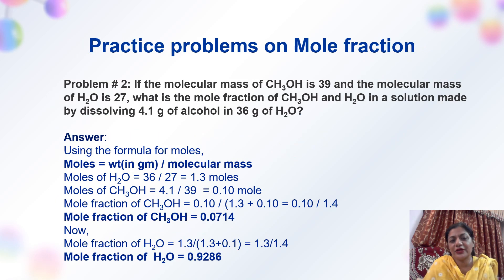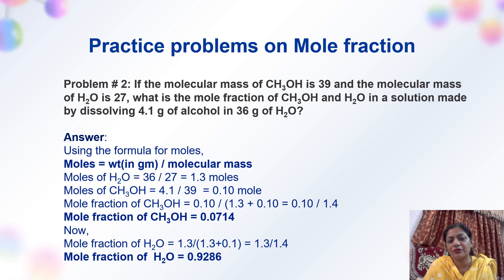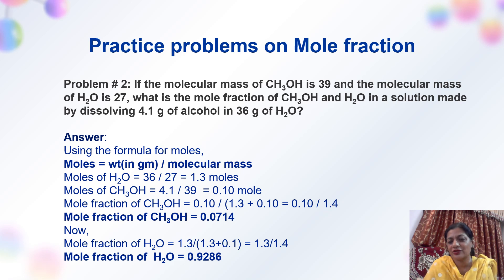Another problem on mole fraction: Given molecular mass of methanol is 39 and water is 27. What is the mole fraction of methanol and water in a solution made by dissolving 4.1 grams of methanol in 36 grams of water? Using the formula — moles equals weight in grams divided by molecular mass — we calculate moles of water and moles of methanol, then find the mole fraction of each.